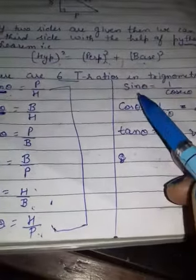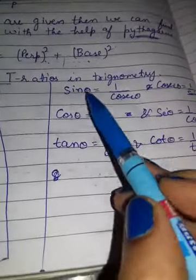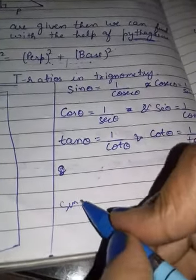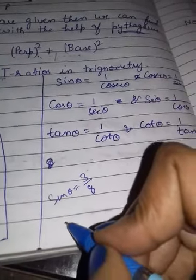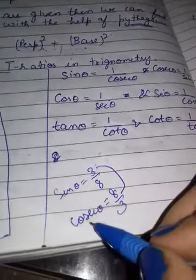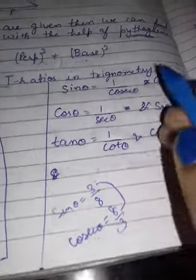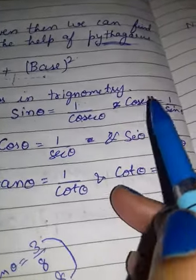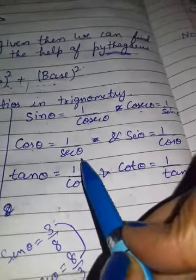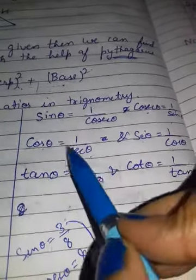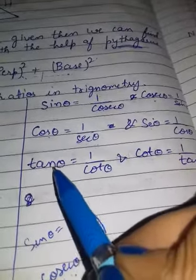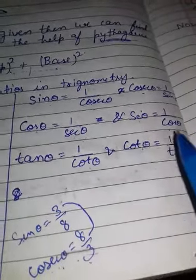Sin theta is equal to 1 by cosecant theta. If you know sin theta is 3 by 8, then cosecant theta is 8 by 3 — you take the reciprocal. Similarly, cosecant theta equals 1 by sin theta. Cos theta equals 1 by secant theta, and secant theta equals 1 by cos theta — this is the reciprocal of that. Tan theta equals 1 by cot theta, and cot theta equals 1 by tan theta.